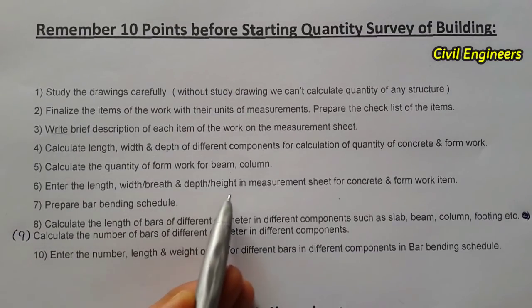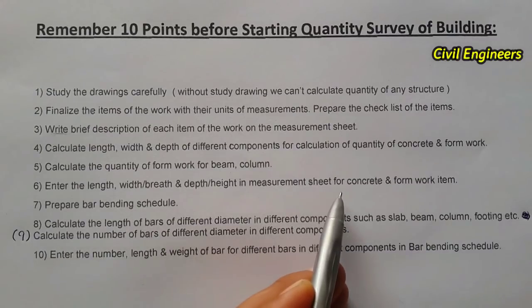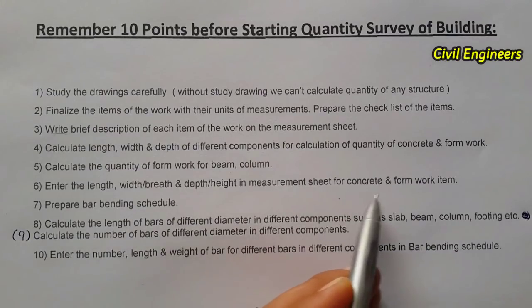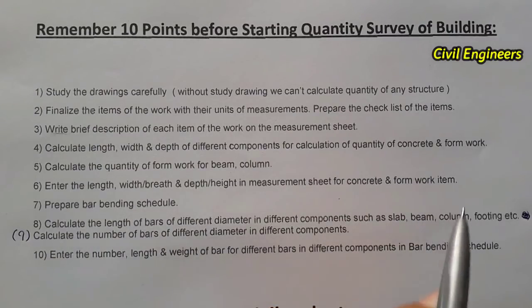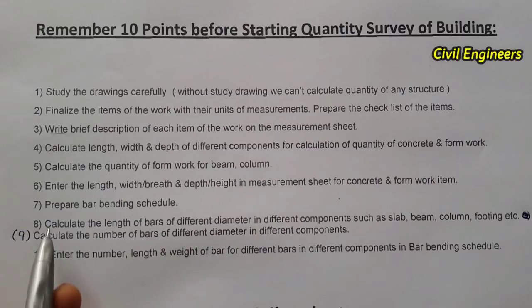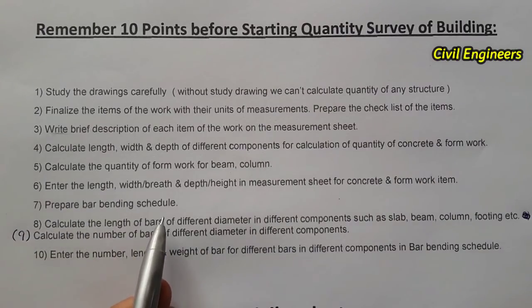The sixth point is to enter the length, width, breadth, and depth or height in the measurement sheet for concrete and formwork items.